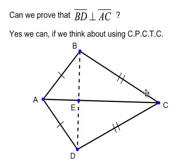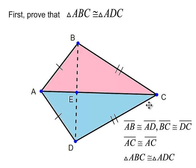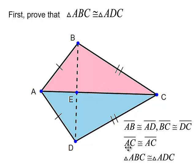We can see two sides that are congruent, two more sides that are congruent, and a shared side AC up the middle — reflexive property, AC is congruent to itself. So we can prove that the pink triangle ABC is congruent to triangle ADC by Side-Side-Side, and from there we can say these triangles are congruent.